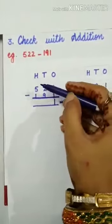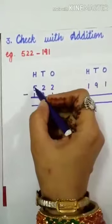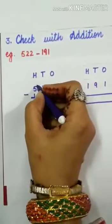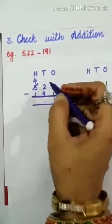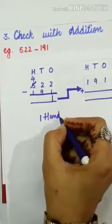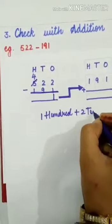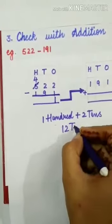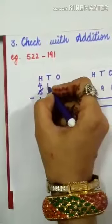What we will do? We have to take borrow from the hundreds place. The hundreds place digit is 5. If we take 100 from here, what will be left? 4 will be left. Now at the tens column, it becomes 100 and 2 tens, which together make 12 tens.